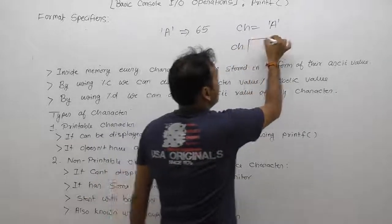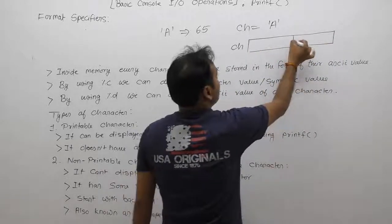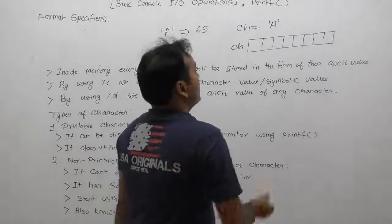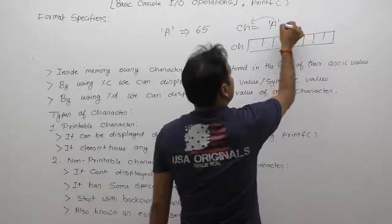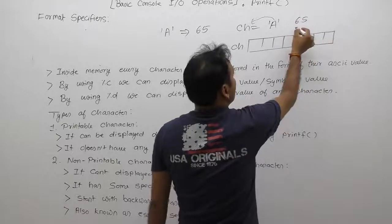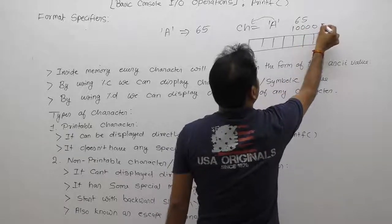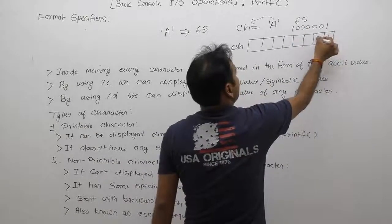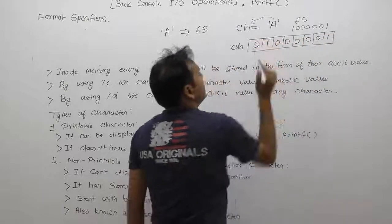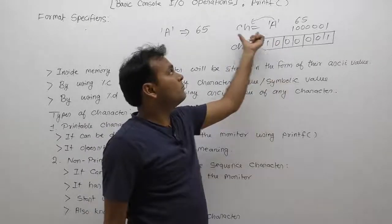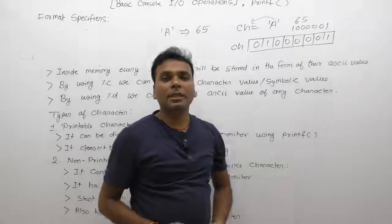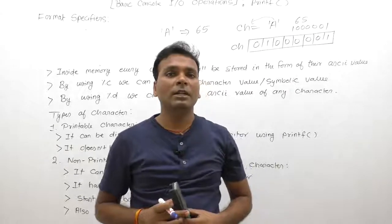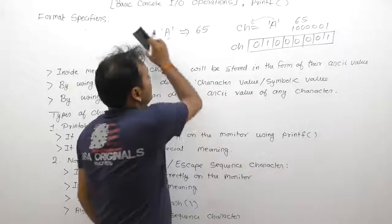Suppose we have a character type variable 'c' assigned the value 'a'. Variable c will take one byte — one byte equals eight bits. When 'a' is stored in variable c, the binary value of 65 is stored. The binary number of 65 is 01000001. This is the binary representation of 65, or character 'a'. Every character is stored in memory in the form of its ASCII value, so 'a' is simply equivalent to 65.